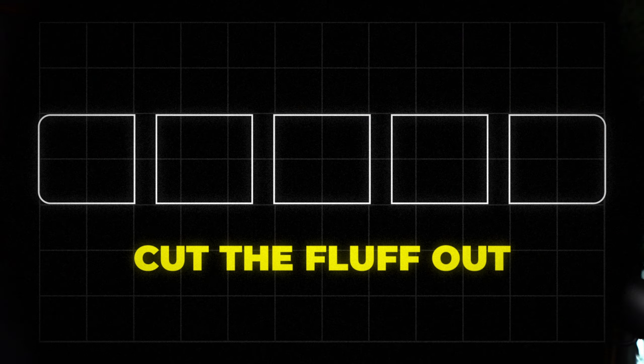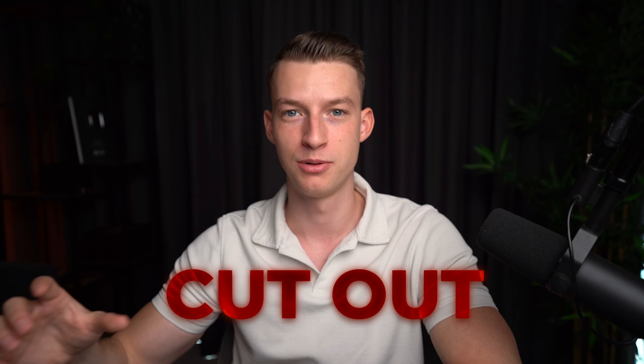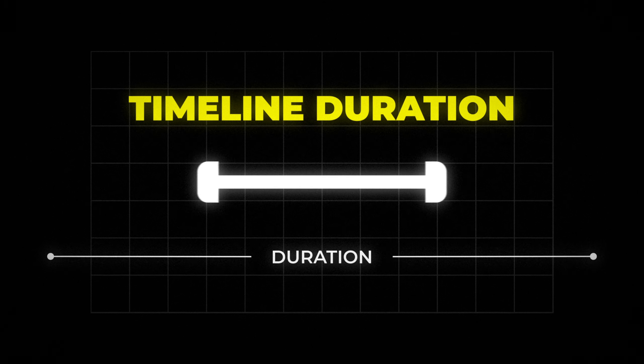Step number three is putting everything onto your timeline and then cutting out all the fluff. It's very important to be critical about what you leave in and what you don't, because a good editor is not necessarily someone who knows all the fancy effects — it's someone who knows what to keep and what to leave out. Anything you're repeating too many times or that can be boring to the viewer should ideally be cut. Try to get the video down to as short as possible while still getting all the information or entertainment across.